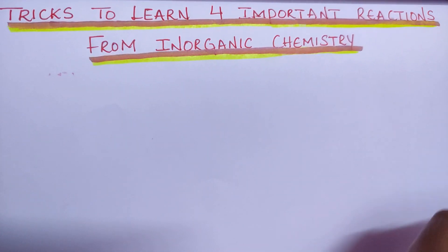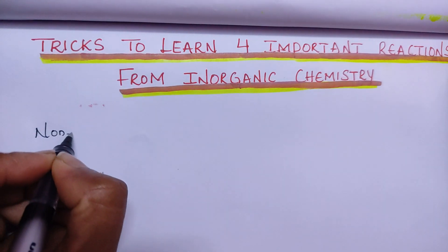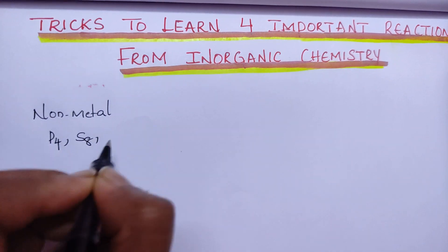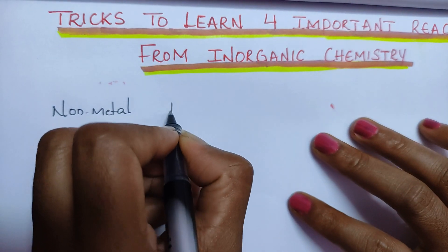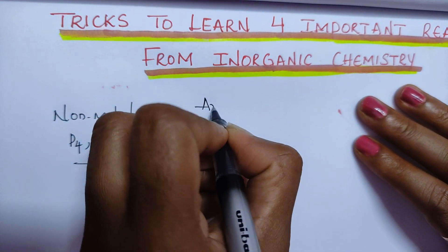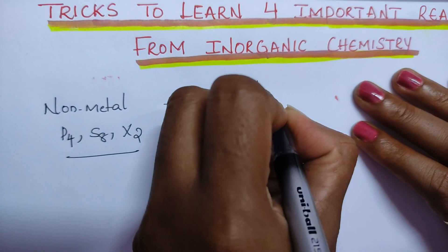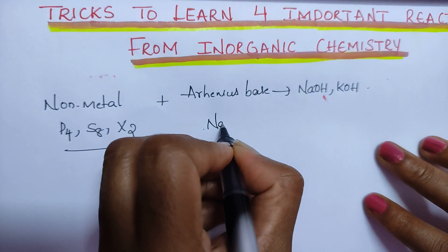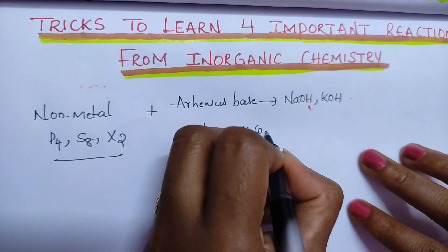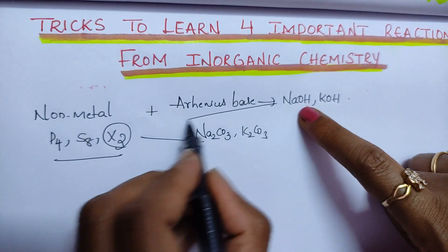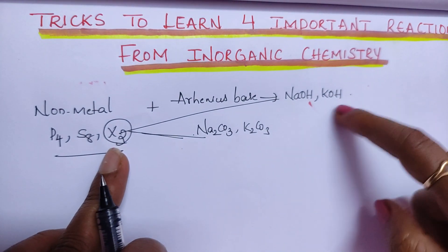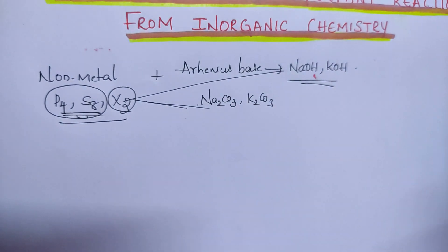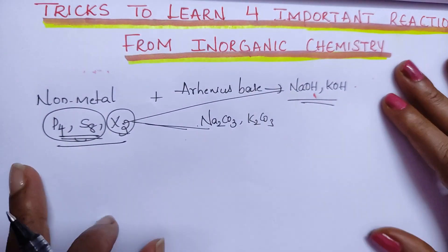Non-metals like P4 (phosphorus), sulfur, and halogens can react with bases like Arrhenius bases such as NaOH or KOH, or with basic salts like Na2CO3 or K2CO3. Halogens react with both types. You are going to learn four reactions: halogen with NaOH/KOH/Na2CO3/K2CO3, and P4 and sulfur with NaOH.